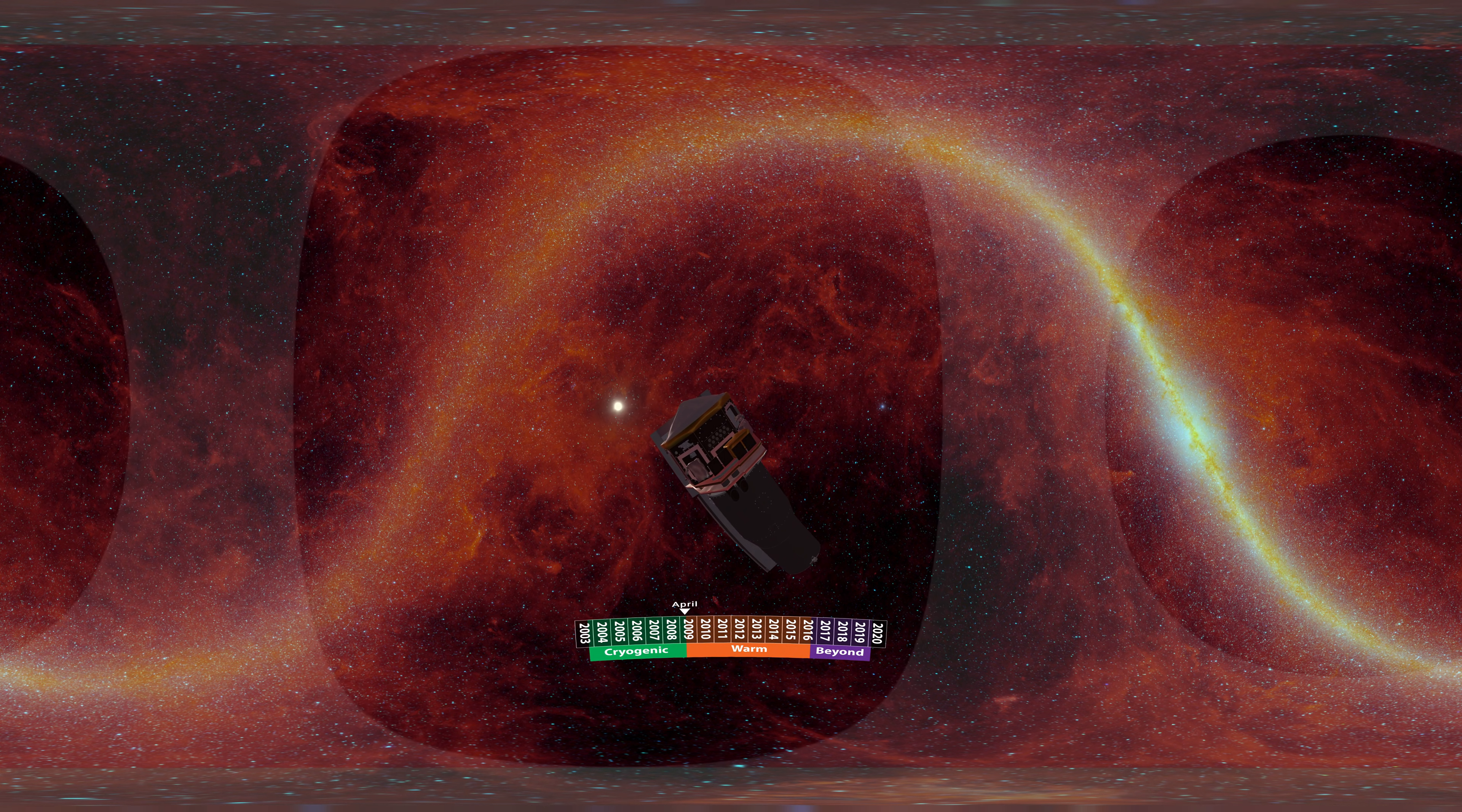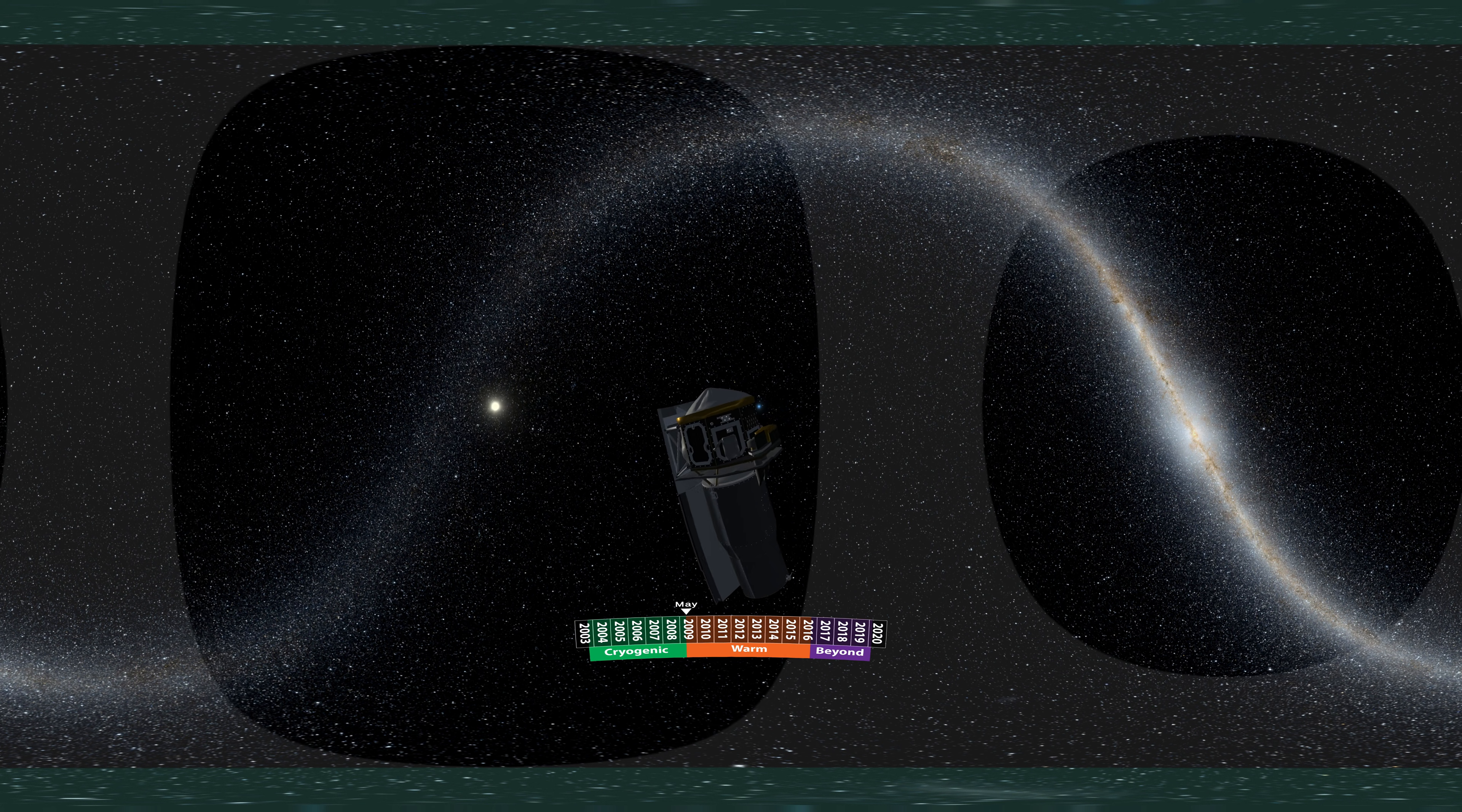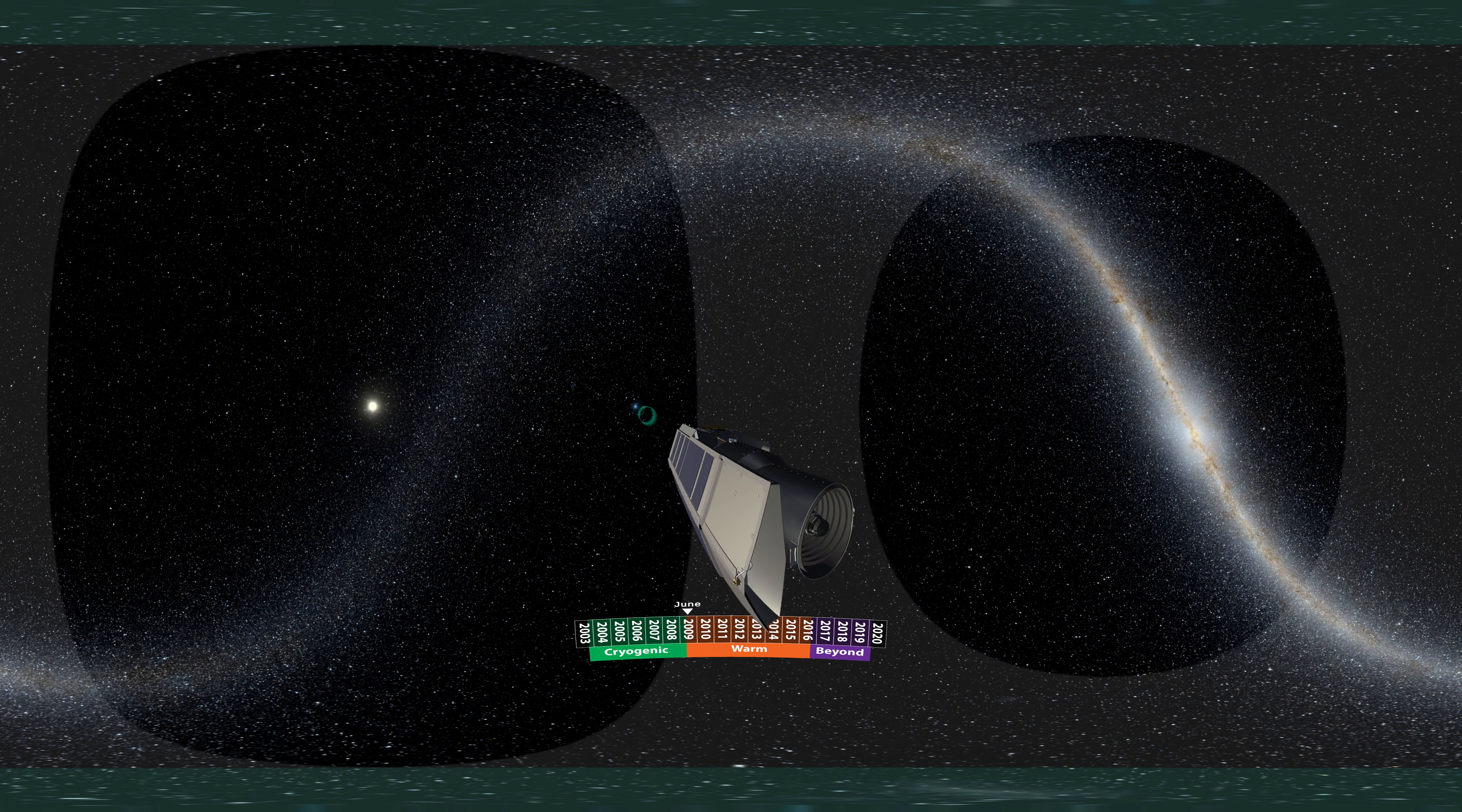Spitzer's carefully managed supply of liquid helium lasted half a year longer than expected, but was depleted in May of 2009. Telescope temperatures increased to about 30 degrees above absolute zero, still cold by most standards, but to astronomers, it marked the beginning of Spitzer's warm mission.